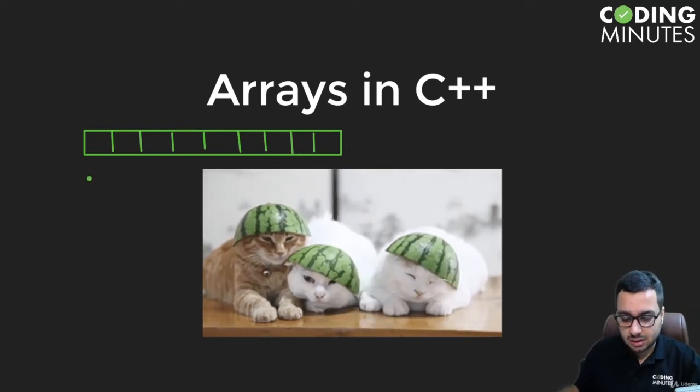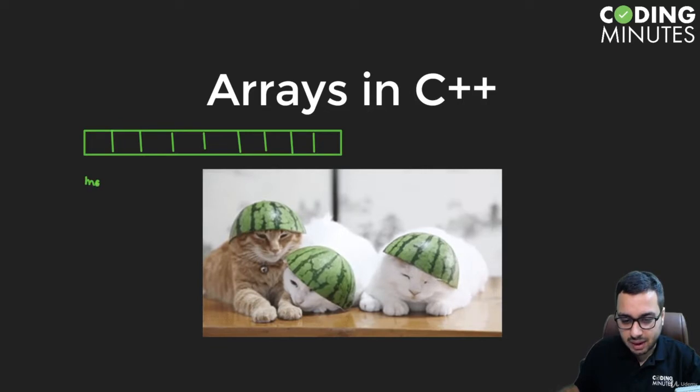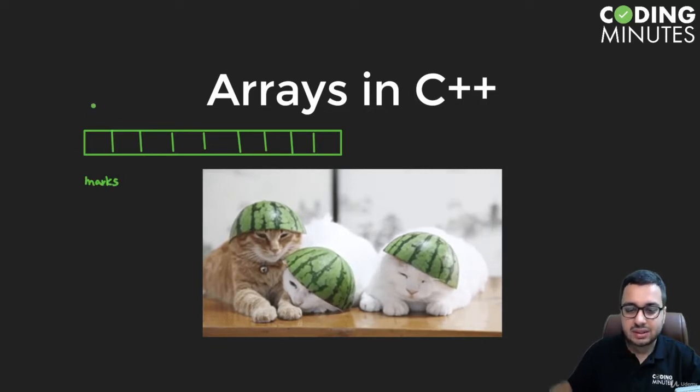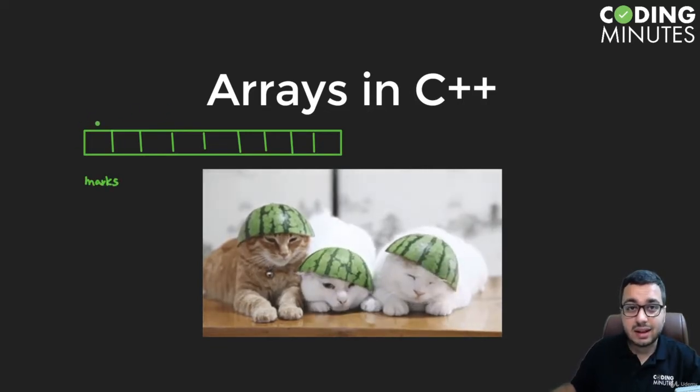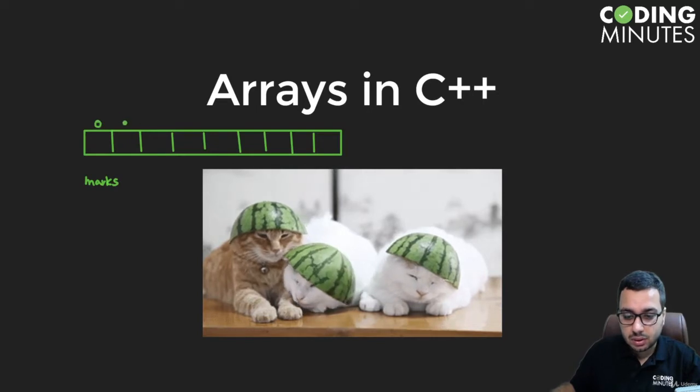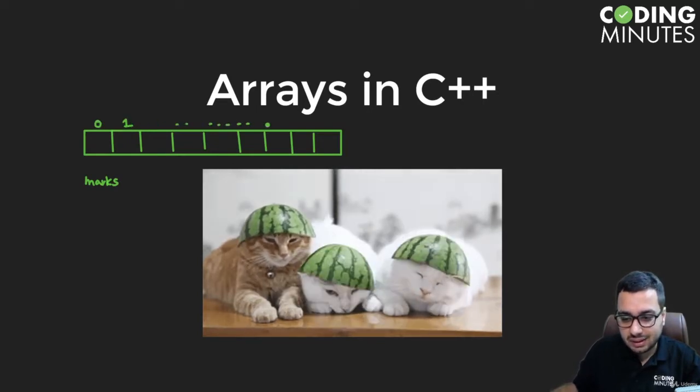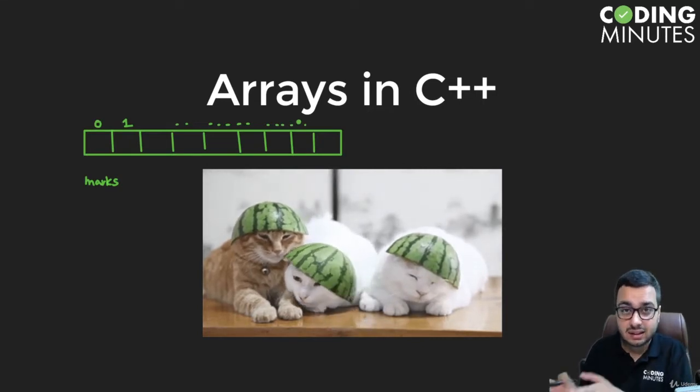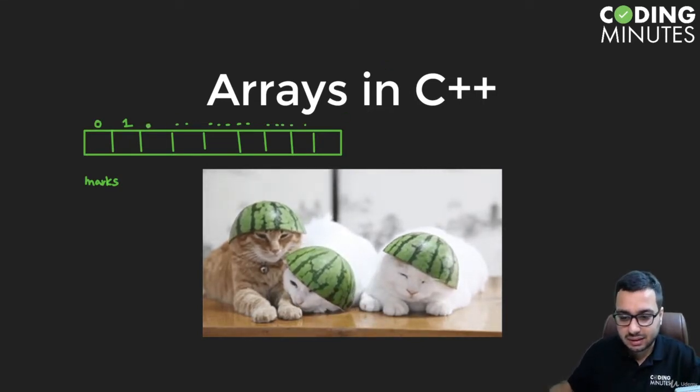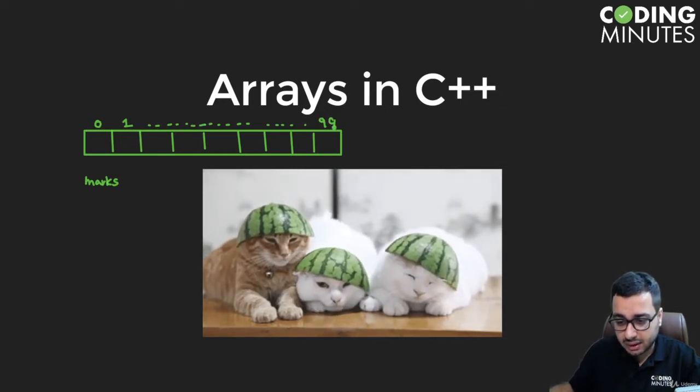Let's create an array like this. We call this as marks, and each index - so this array is indexed from zero. If it is having a size of a hundred, then these are a hundred buckets which are lying linearly in the memory. So this linear collection of elements is known as an array. The last index would be 99.